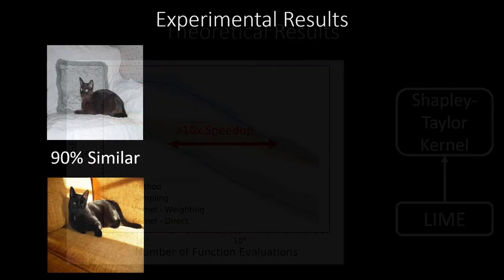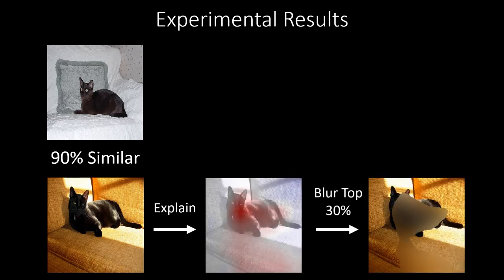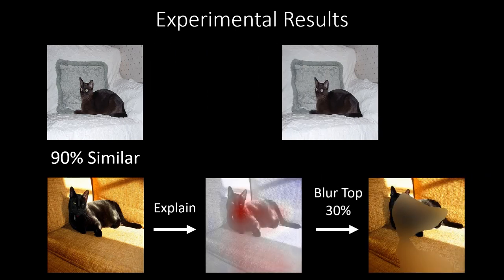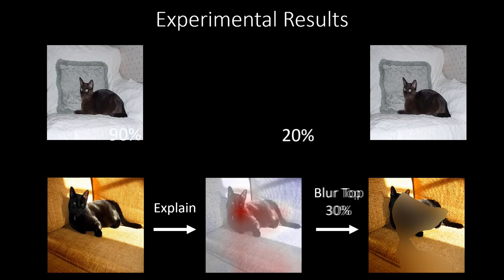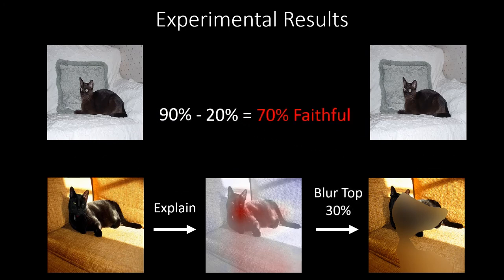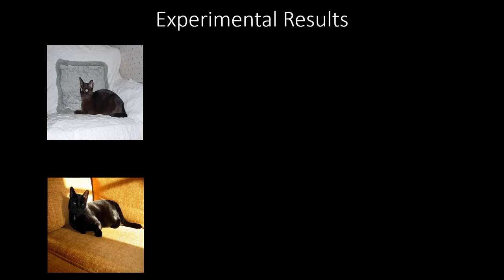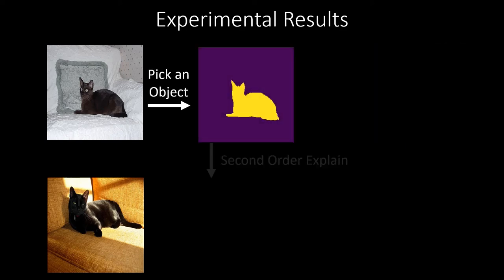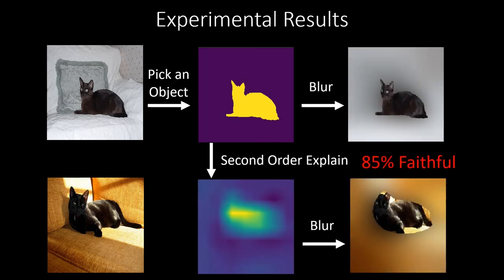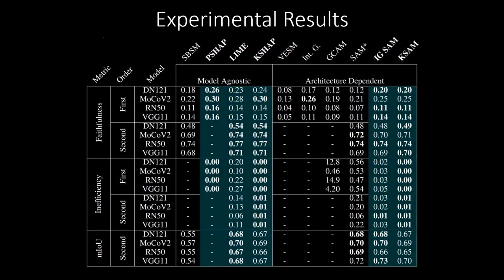To evaluate our approach, we measure how blurring salient regions affects image similarity. Large changes in similarity mean that our methods correctly found important areas for the similarity judgment. We can generalize this experimental approach to second-order methods by measuring how well standard objects are connected across differing pairs of images. We find that game-theoretically grounded methods are more faithful to the underlying model, do not violate the axioms of fair credit assignment, and perform better at semantic segmentation label propagation tasks.